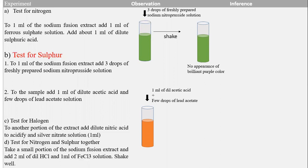We have another test for sulfur: the lead acetate test. We take the sample, add 1 mL of lead acetate solution — if a black precipitate forms, sulfur is present; otherwise sulfur is absent.